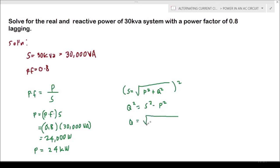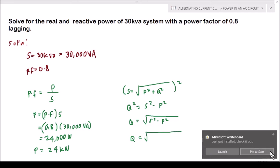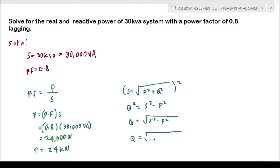Then solving for Q, that would be equal to square root of the apparent power squared minus the real power squared. We will substitute our given and the real power that we have solved earlier. So we have that will be equal to 30,000 squared minus 24,000 squared.